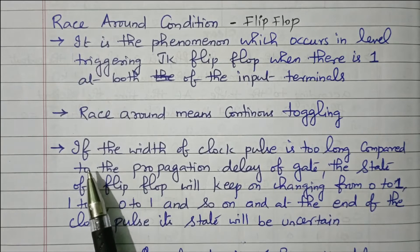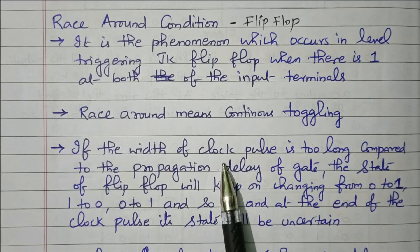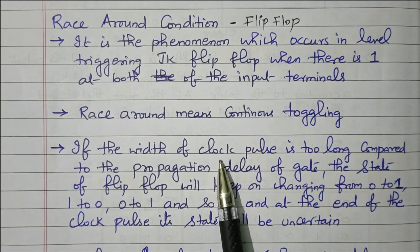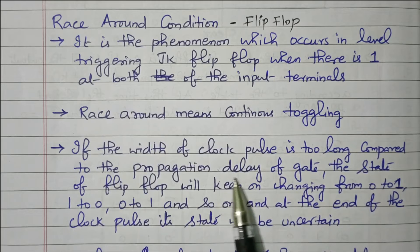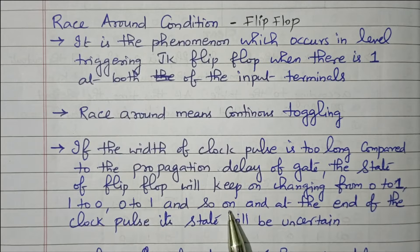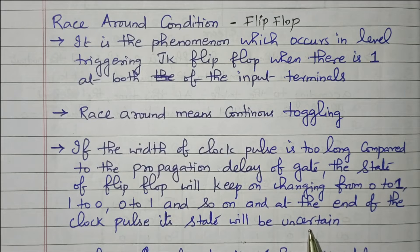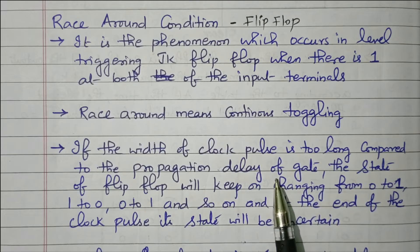Why is it toggling? If the width of the clock pulse is too long — we know that in a flip-flop, every clock pulse the status changes, it is a sequential circuit — when the clock pulse is applied, the state changes from one state to another. The width of the clock pulse is too long compared to the propagation delay of the gate, so the state of the flip-flop will keep on changing: from 0 to 1, 1 to 0, 0 to 1, and so on. At the end of the clock pulse, its state will be uncertain — we don't know what the output is.